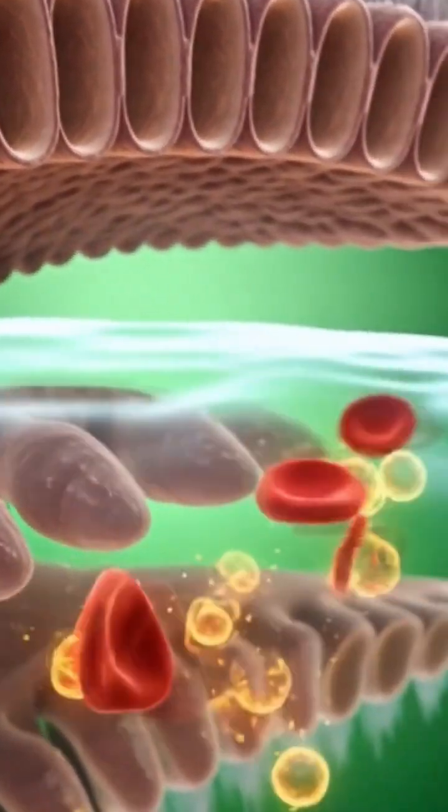Inside the small intestine, the nutrients from kujur are absorbed through microscopic villi.